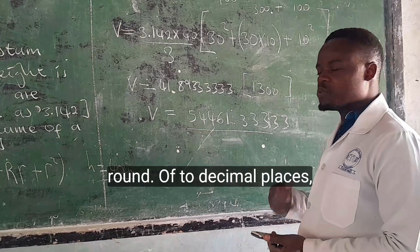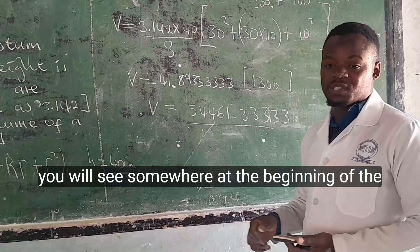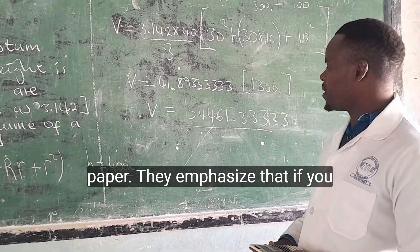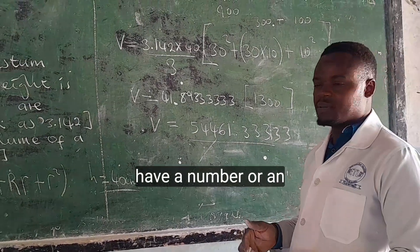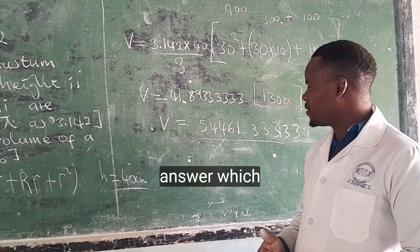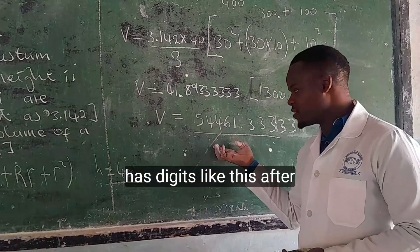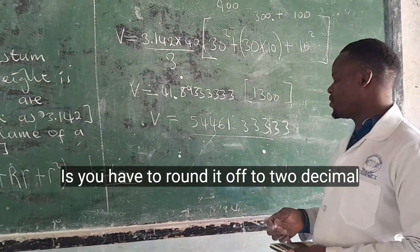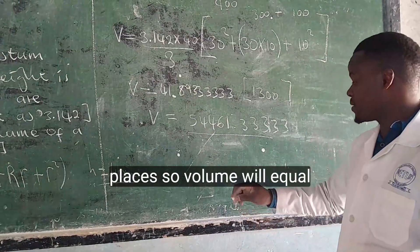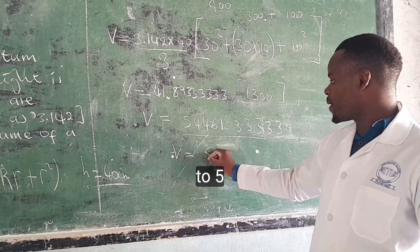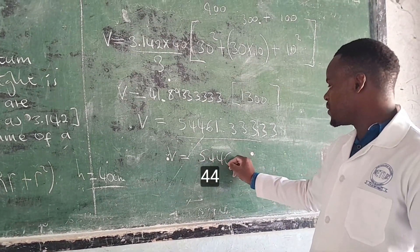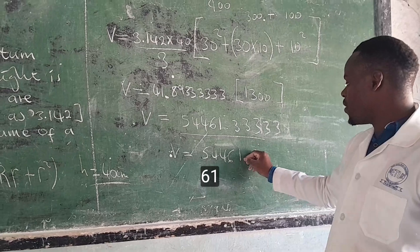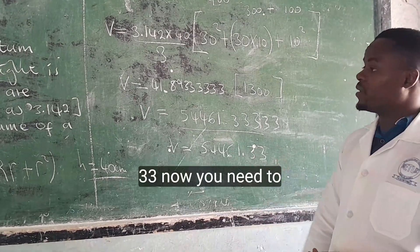So this is the answer, but we have to round it off to two decimal places. You will see somewhere at the beginning of the paper, they emphasize that if you have an answer which has digits like this after the decimal point, you have to round it off to two decimal places. So volume is equal to 54461.33.